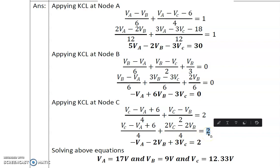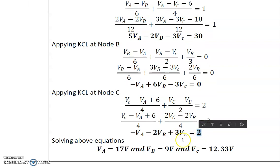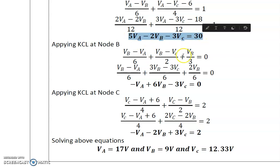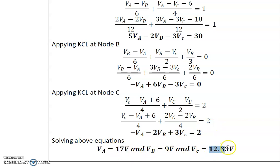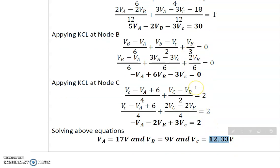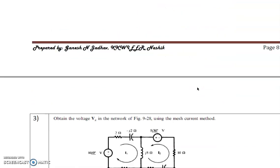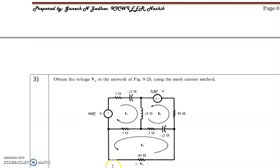Multiplying 4 across: (VC minus VA + 6) + 2(VC minus VB) = 8. Expanding: VC minus VA + 6 + 2VC minus 2VB = 8, giving: minus VA minus 2VB + 3VC = 2. Solving the three simultaneous equations, we get VA = 17 volts, VB = 9 volts, and VC = 12.33 volts. This completes the second problem.